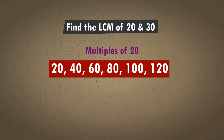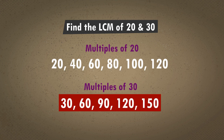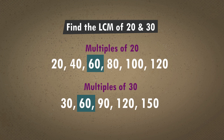Multiples of 30 are 30, 60, 90, 120, 150, and so on. Here we see that 60 and 120 are the common multiples of 20 and 30. But 60 is the least common multiple.